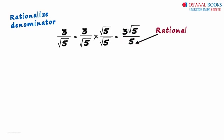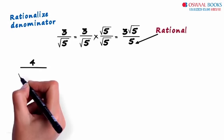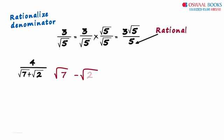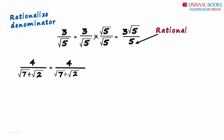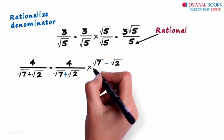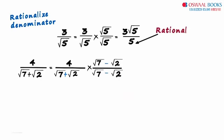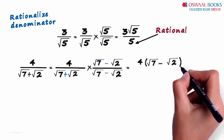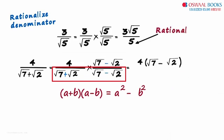The second example asks us to rationalize the denominator of 4 divided by root 7 plus root 2. To rationalize the denominator, all we have to do is change the sign in between. The sign here is plus, so the rationalizing factor of the denominator will be root 7 minus root 2. We write this expression as 4 divided by root 7 plus root 2, multiplied by root 7 minus root 2 divided by root 7 minus root 2. The numerator equals 4 multiplied by root 7 minus root 2. The denominator is in the form A plus B multiplied by A minus B, which equals A squared minus B squared.